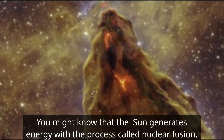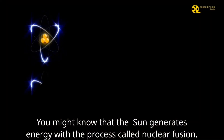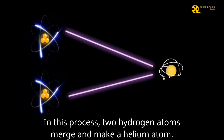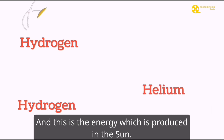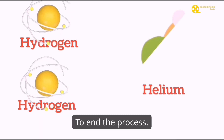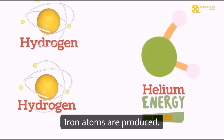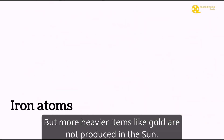You might know that the sun generates energy through a process called nuclear fusion. In this process, two hydrogen atoms merge and make a helium atom, and in addition some energy is also produced — this is the energy which comes from the sun. Ultimately, iron atoms are produced which lie in the core of the sun, but heavier elements like gold are not produced in the sun.